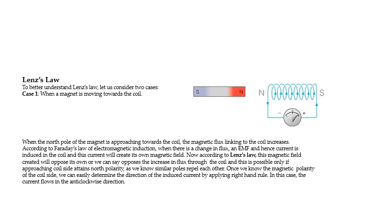As we know, similar poles repel each other. Suppose a magnetic field has been created — this coil will behave as a magnet, and this portion will behave as a north pole. Both north poles will repel each other. So if you are moving the magnet towards the coil, the coil will behave as a north pole to try to repel it. The current flows in the anticlockwise direction so that you get north here and south here.